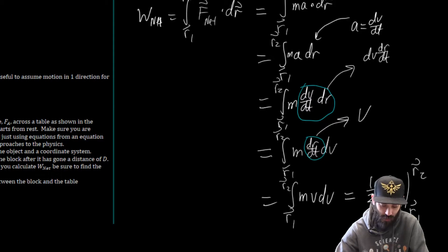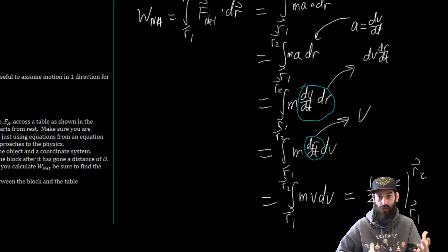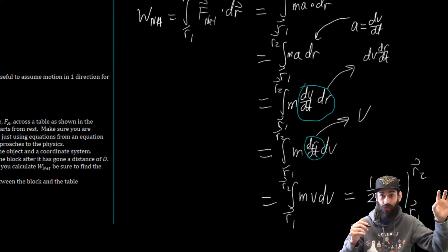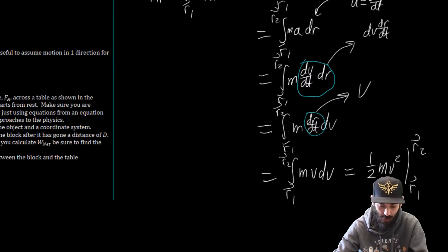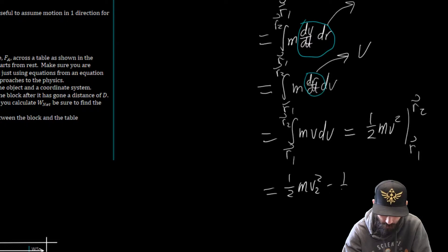This dr/dt that I have here is really just v. So this is the same thing as the integral from R vector 1 to R vector 2 of Mv dv. When we do this integral, we're going to say this is going to be 1/2 Mv squared evaluated from R vector 1 to R vector 2.